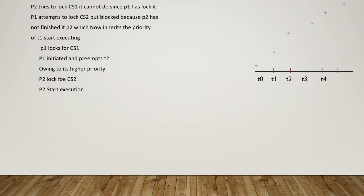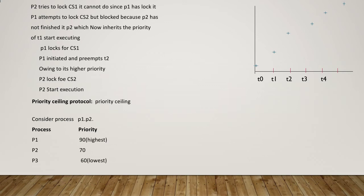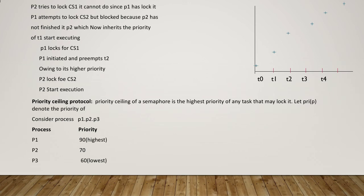Coming to the priority ceiling: the priority ceiling of a semaphore is the highest priority of any task that may lock it. Let PRI(P) denote the priority of process P and PRI(CS) the priority ceiling of semaphore of critical section CS. Consider processes P1, P2, P3 with priorities 90 (highest), 70 (middle), and 60 (lowest).